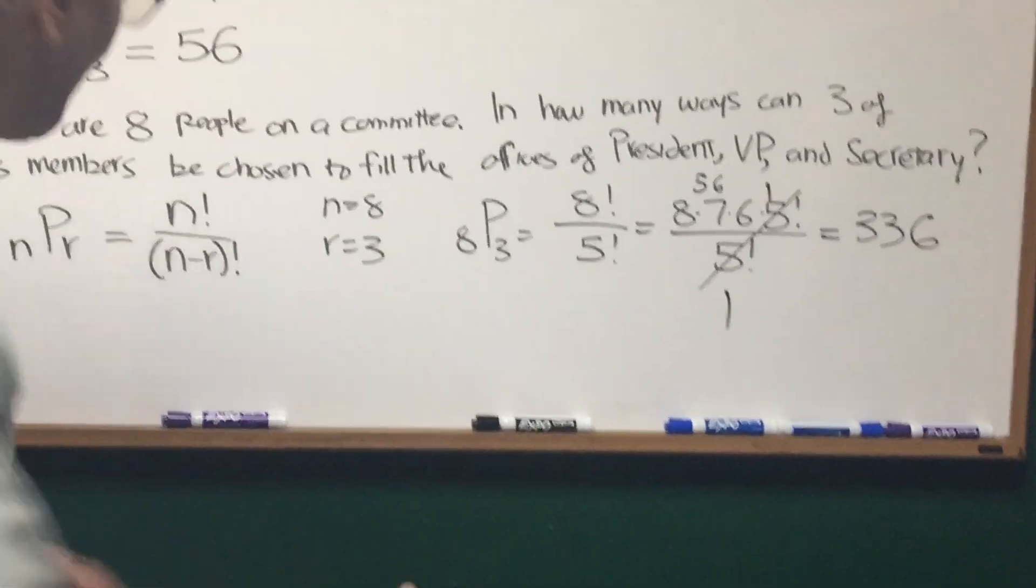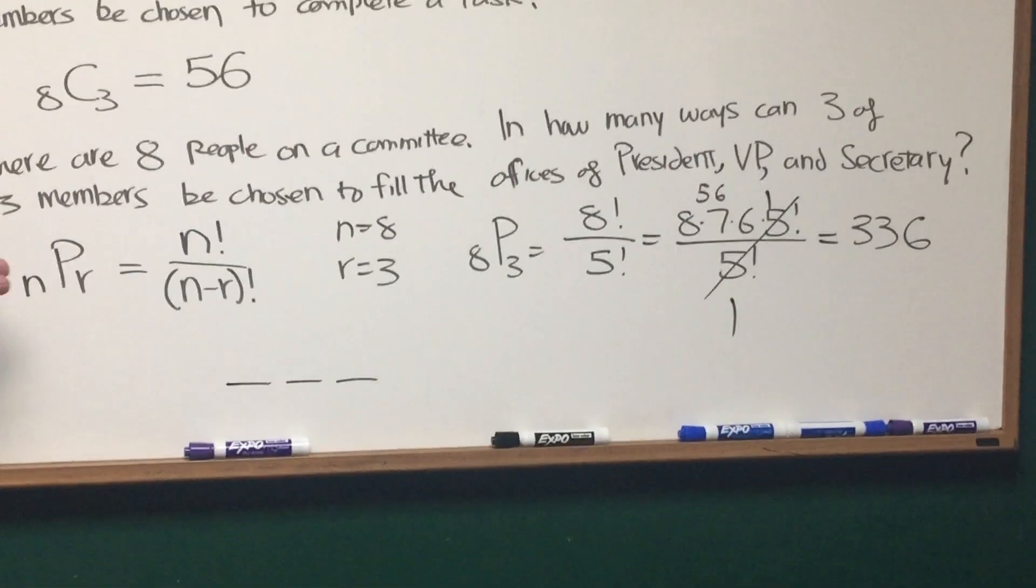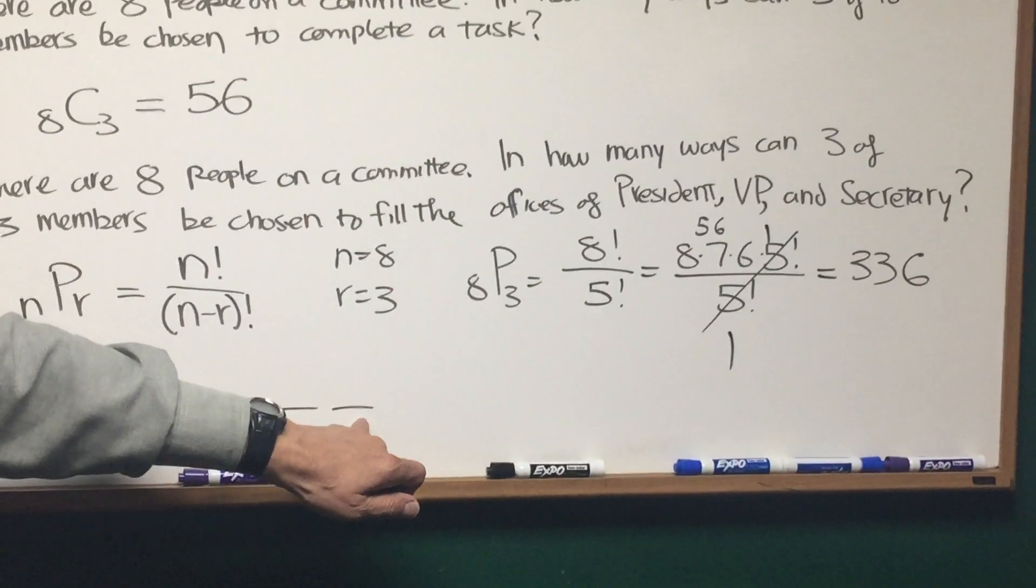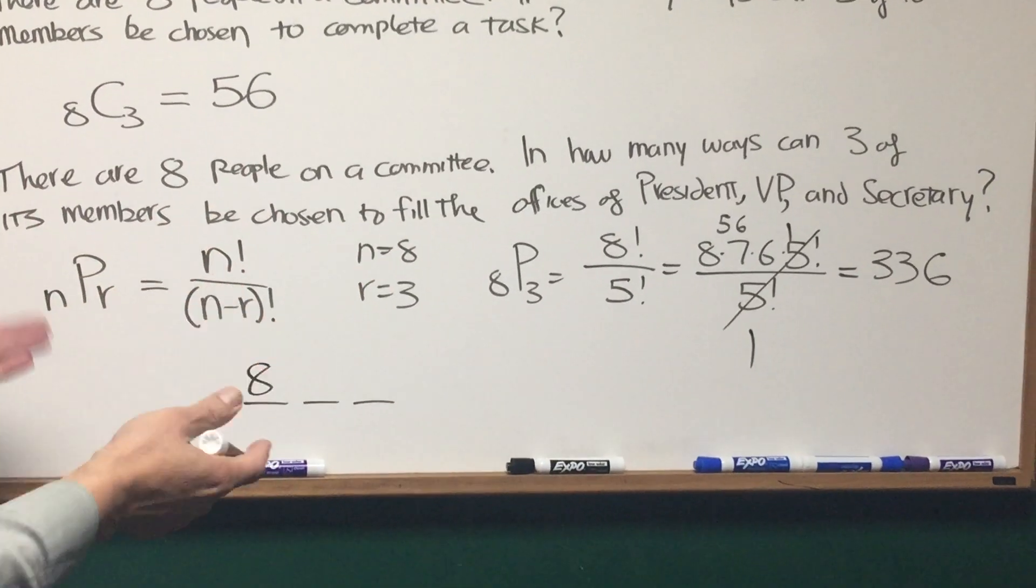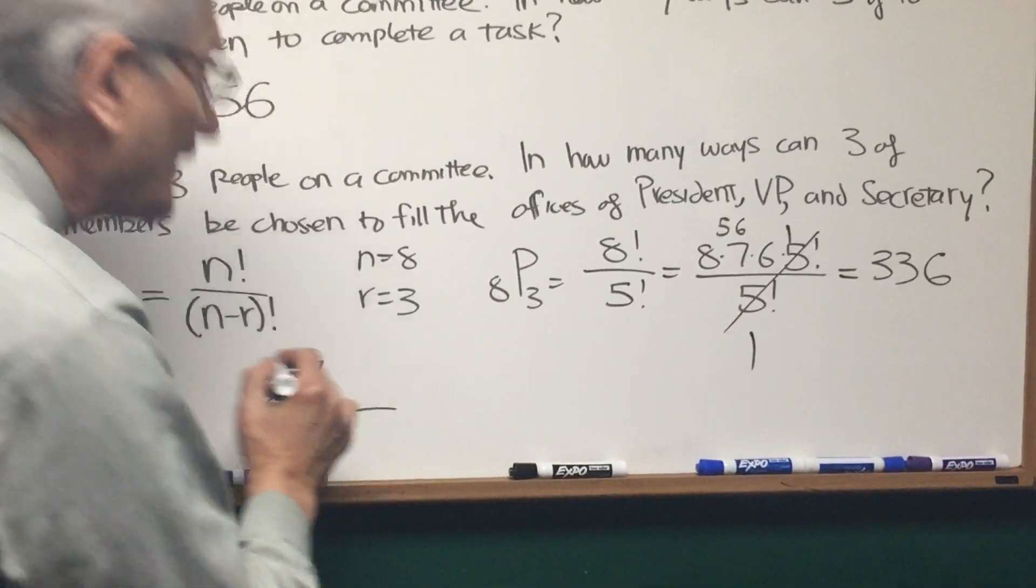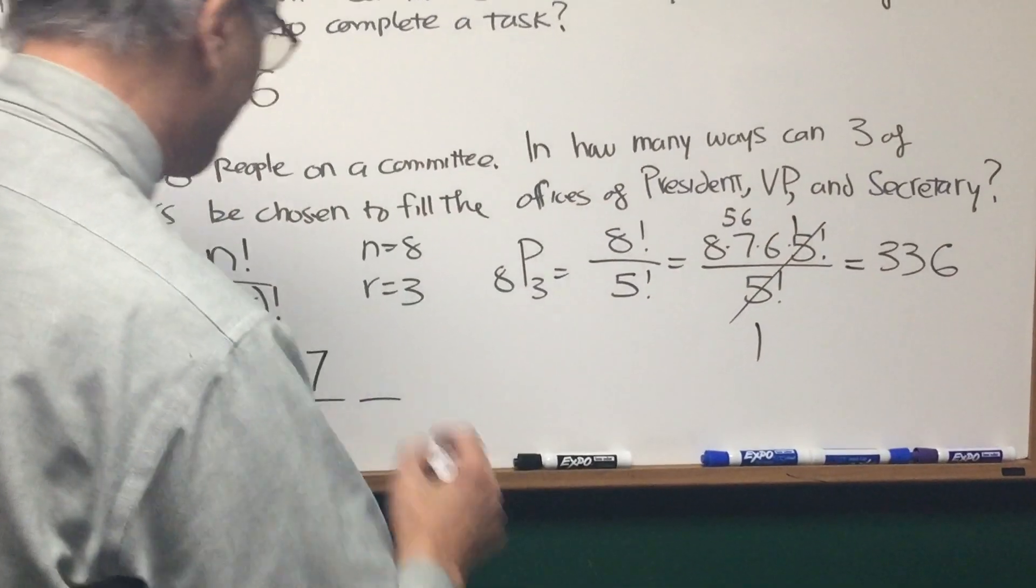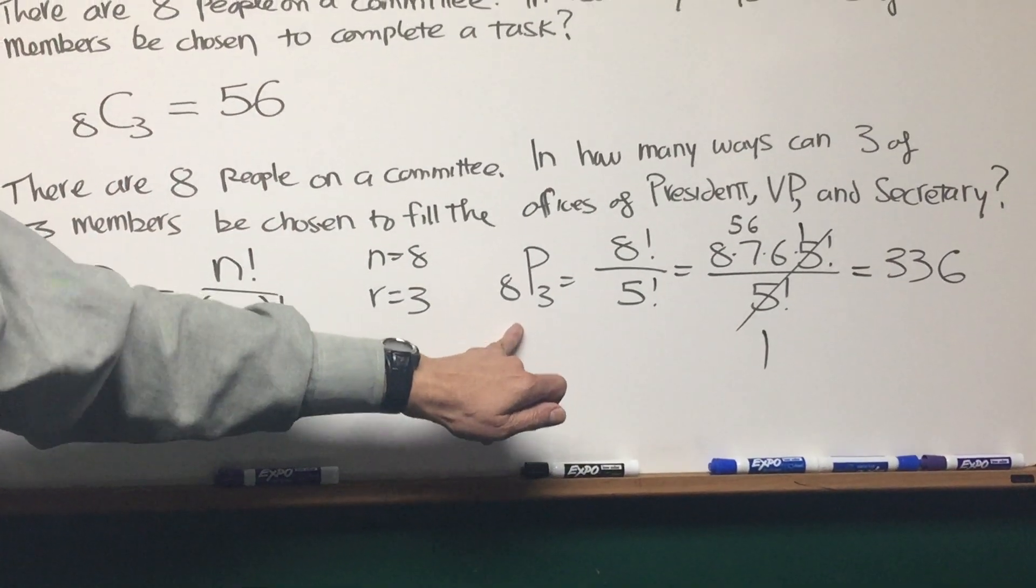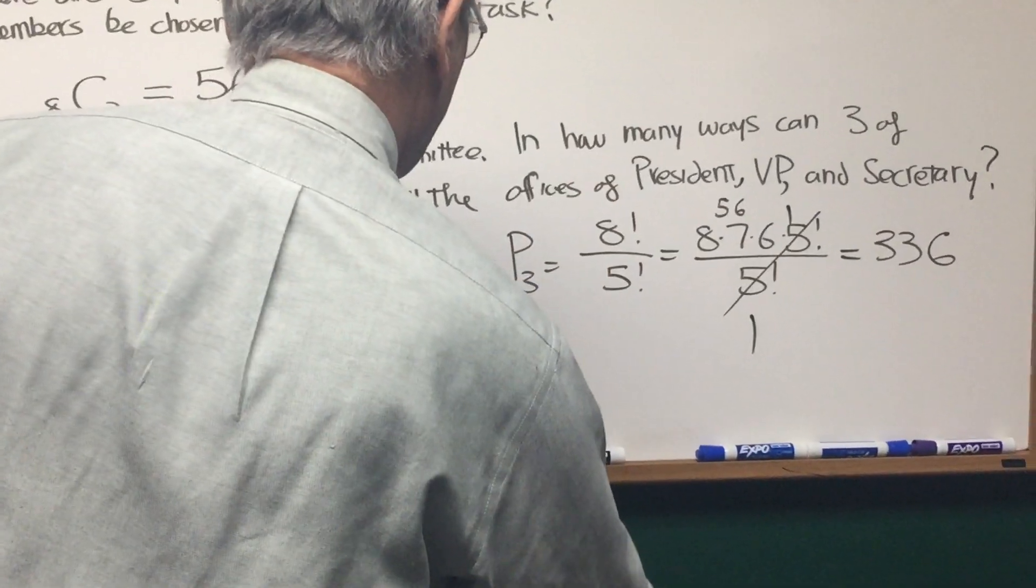This can also be done by a simple, what's called license plate counting in some circles. And how many ways can three members be chosen to fill the offices of president, vice president, and secretary? For the first office, there are eight choices because there are eight people on the committee. One person having been elected president, how many choices are left for the vice president? Seven. And then therefore, there are only six members left. How many members is it possible to choose for secretary? Six. Eight times seven times six, which is exactly what the permutation formula gives us. It's a mathematical expression that gives us this license plate type of counting.